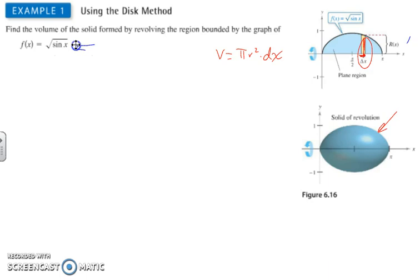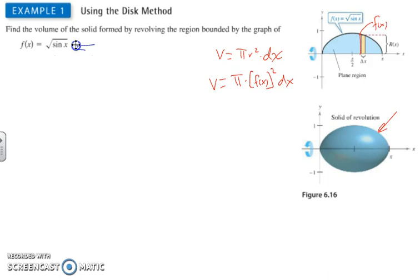To find the volume of this little disk, the volume equals the area of the circle times the width of that disk, which would be dx. The radius of each circle is just f(x), so the volume of each disk is pi times f(x) squared times dx.